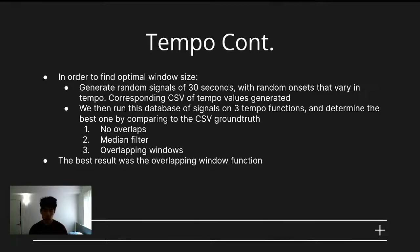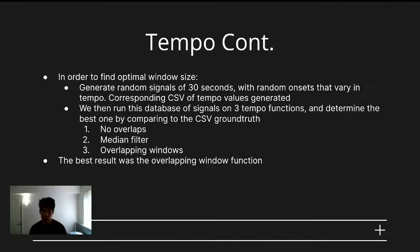To find the optimal window size, we followed these steps. First, we generated a set of random signals of 30 seconds, in which onsets that occur at random intervals were corresponded with a CSV of tempo values, which are the ground truth values for tempo. We ran this database of signals on three variations of the tempo function and determined the best one by comparing it to the ground truth CSV. The three variations are a tempo function with no overlaps, one with a median filter, and one with overlapping windows. We found that the overlapping window function resulted in the best performance.